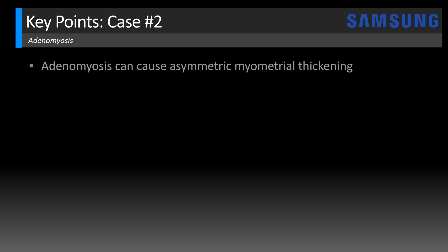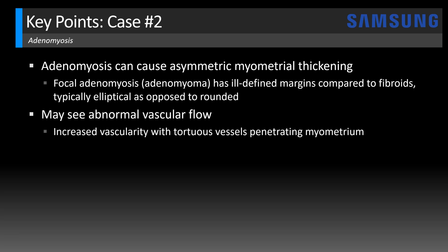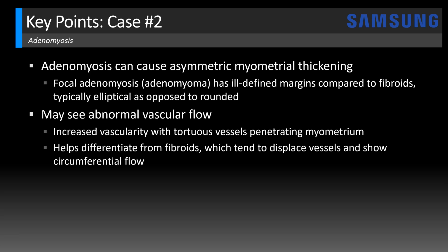Key points for case two: Adenomyosis can cause asymmetric myometrial thickening, and when focal, it's known as an adenomyoma. It will typically have ill-defined margins compared to fibroids and will be elliptical in shape as opposed to rounded. Adenomyosis will sometimes have abnormal vascular flow — increased vascularity with tortuous vessels penetrating the myometrium. This can be quite helpful to differentiate adenomyosis from fibroids, because fibroids tend to displace vessels and will show circumferential flow rather than penetrating flow.